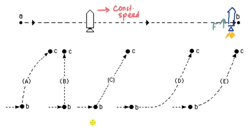Now the question is: what will be the path of the rocket after point B? Pause the video and give this a try. Let's look at Option A. When the engine starts at point B, a constant force begins acting in the vertical direction, and the rocket follows a particular path.